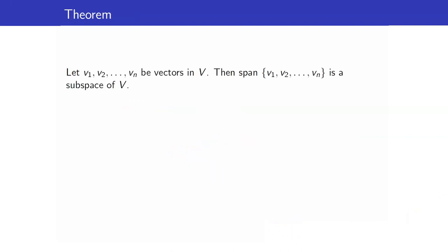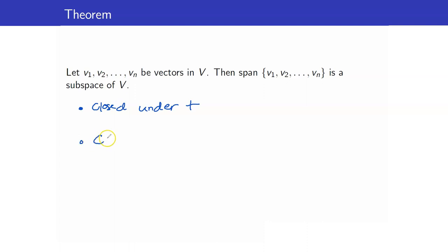I will not prove this theorem, but it turns out that the span of a given set of vectors is actually a subspace of V. The proof of this is an exercise. Let me give you a hint — recall the subspace test theorem. We check if something is a subspace by verifying that it is closed under vector addition and closed under scalar multiplication.